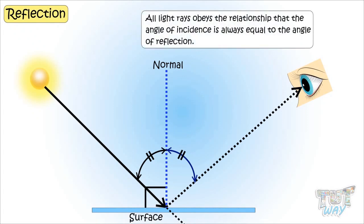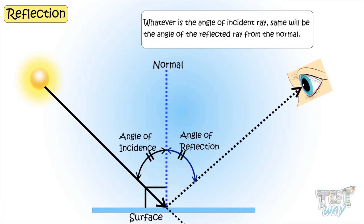All reflected light obeys the relationship that the angle of incidence always equals the angle of reflection. Whatever will be the angle of the incident ray, equal will be the angle of the reflected ray from the normal.